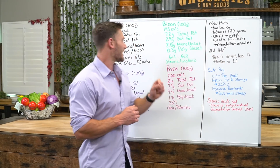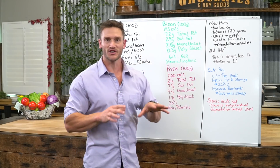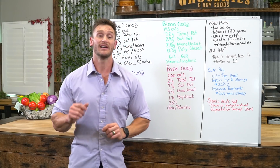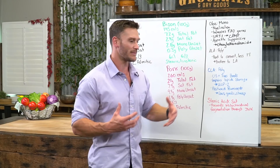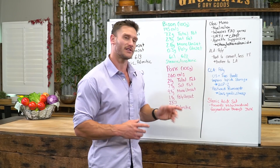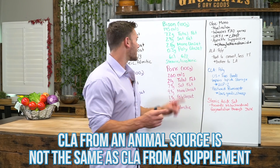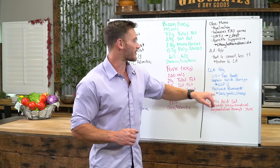Conjugated linoleic acid, or CLA, is found in pastured ruminants — cows, sheep, bison — anything eating grass on a pasture. It's technically a polyunsaturated fat and a form of trans fat with cis and trans bonds, but it's very good for you. It impairs lipid storage by activating uncoupling protein 2, making cells reject excess fat. Studies show that even small amounts of CLA make a big difference in fat metabolism and fat loss. Note that CLA from animal sources is not the same as CLA supplements, which are an artificial form.